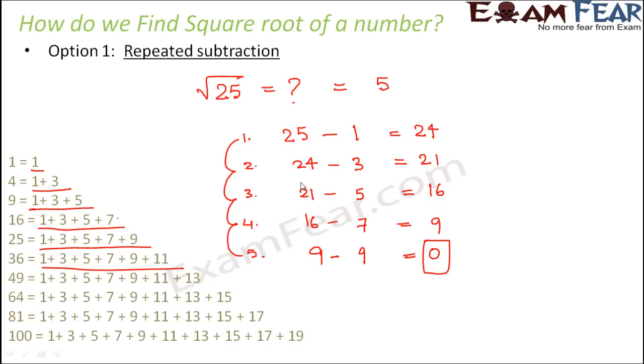However, this method is not suitable for large numbers. For example, here we took 25 so that was fine. Now let's say that if I ask you to find out the square root of 121. Do you think that this is a very suitable method? Because in that case the square root of 121 is actually 11.